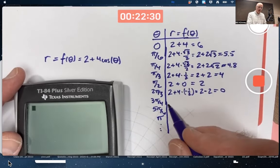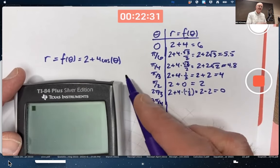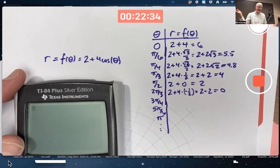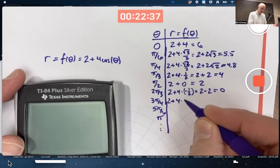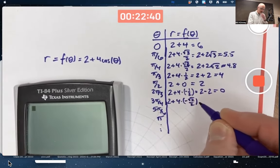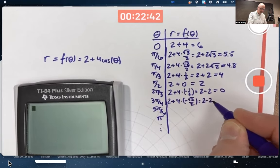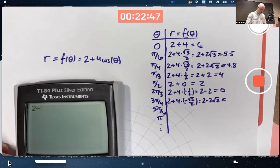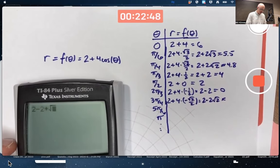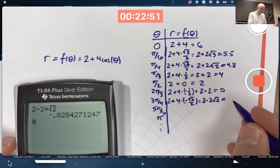3 pi over 4. Cosine of that is going to be negative root 2 over 2. 2 plus 4 times negative root 2 over 2, which is 2 minus 2 root 2, which is negative. 2 minus 2 times square root of 2 is about negative 0.8.